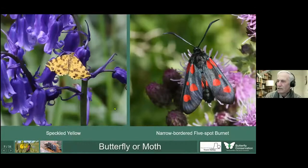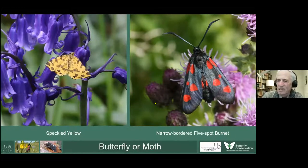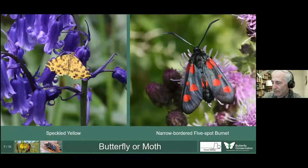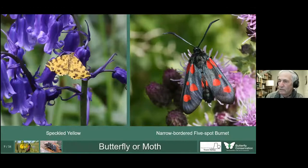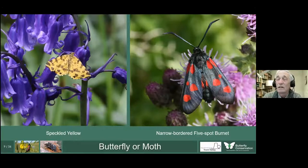How do we tell whether we've got a butterfly or a moth? In fact, we shouldn't really distinguish them, because butterflies are just day-flying moths. There are 76 or so species of butterfly but two and a half thousand species of moths. One old wives' tale is that butterflies fly during the day and are colourful, while moths fly at night and are dull brown — but some moths are colourful and habitually fly during the day. There are something like 140 to 150 species of moths which fly during the day.